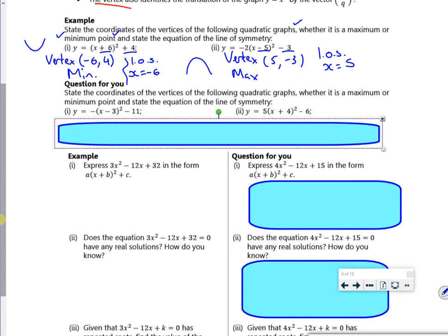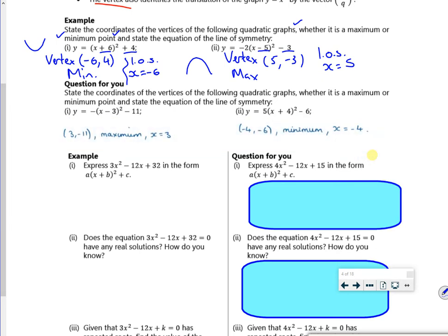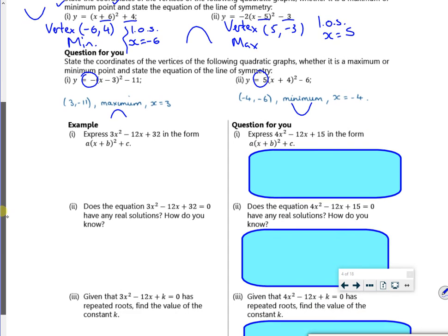So once again, ideally pause it, have a go at it, and then check your answers. There we go. So max, because it's an n shape and then it's a U shape. So that makes it min, that makes it an n shape, that makes it a U shape.